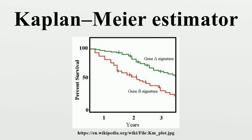Let S be the probability that a member from a given population will have a lifetime exceeding time t. For a sample of size n from this population, let the observed times until death of the n sample members be corresponding to i. Each t_i has n_i, the number at risk just prior to time t_i, and d_i, the number of deaths at time t_i. Note that the intervals between events are typically not uniform.